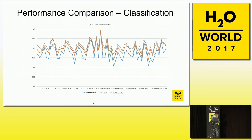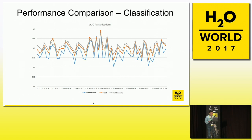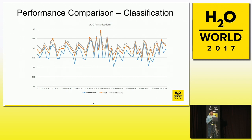This is a similar comparison on the classification side — the comparison is now in terms of AUC, so higher values are better. We see there is a smaller difference between GBM and rule ensembles on classification problems, at least when measured in terms of AUC. What I found in my use of this method is that the rule ensemble model tends to be significantly more compact than an equivalent GBM model.